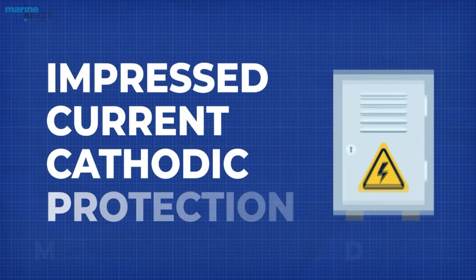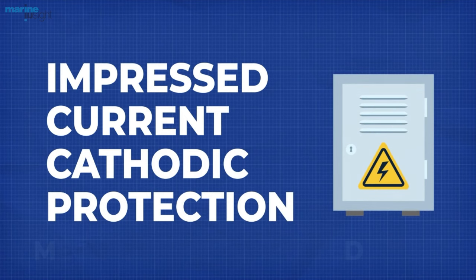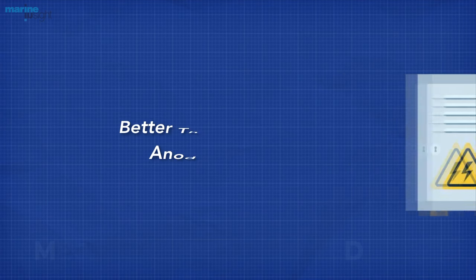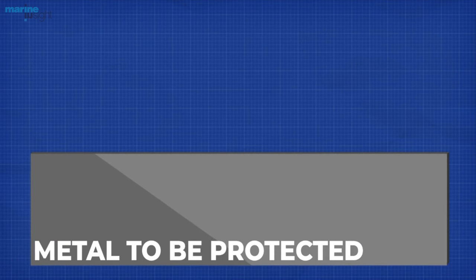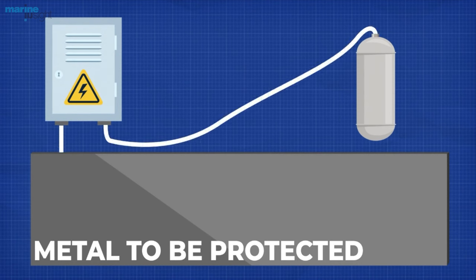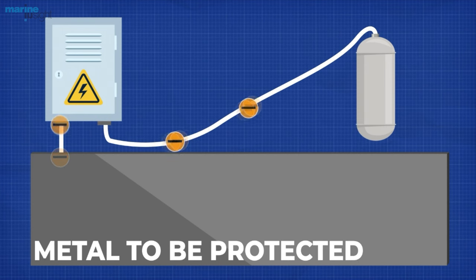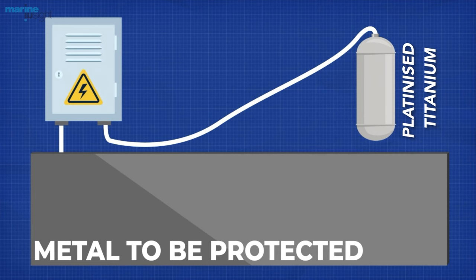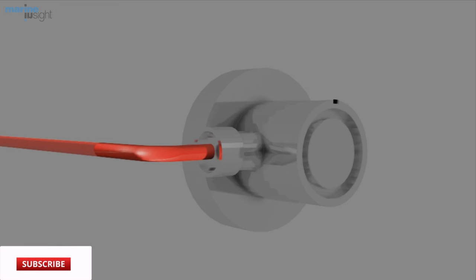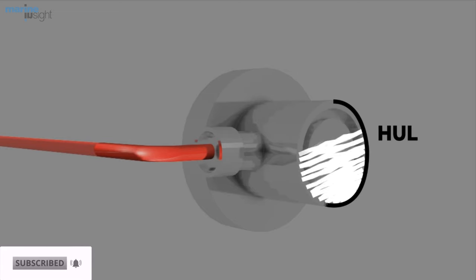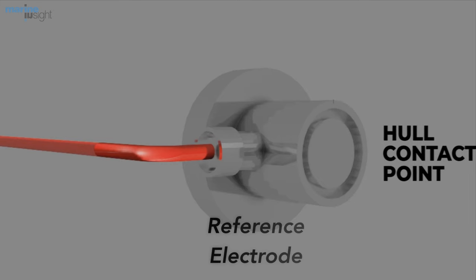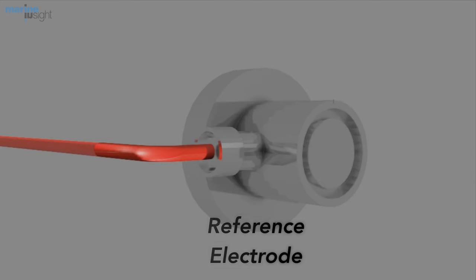Impressed current cathodic protection systems are technologically advanced and a long-term solution to corrosion problems, and are regarded as a superior alternative to sacrificial anode systems. In the ICCP, the metal to be protected is connected to an insoluble anode and current is passed using a DC source opposite to the corrosion current, so that the corroding material gets converted from anode to cathode and is protected from corrosion. This insoluble anode can be either platinum, platinized titanium or any other inert anode. Here, a contact point is taken on the hull of the ship and is connected to a reference electrode, which is completely passive and insoluble.